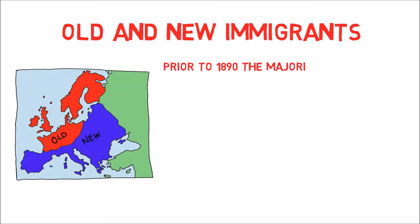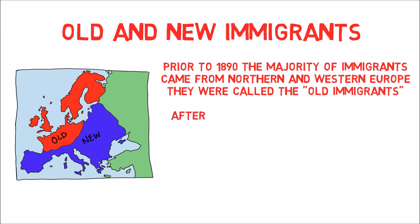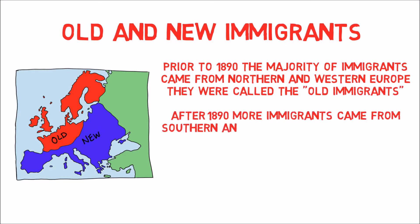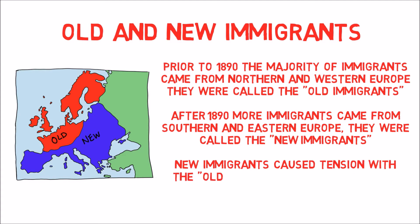Prior to 1890, the majority of immigrants came from Northern and Western Europe — they were called the Old Immigrants. After 1890, more immigrants came from Southern and Eastern Europe — they were called the New Immigrants. New immigrants caused tension with the old immigrants and many other American citizens.